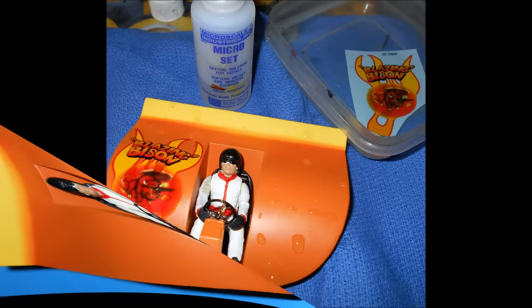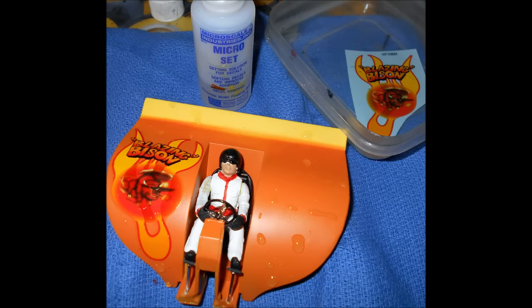Using some setting solution and plenty of warm water, apply the decals to the puller body. Then remove the seat and the driver after you've finished and they've dried. And then clear coat that to seal in the decals.